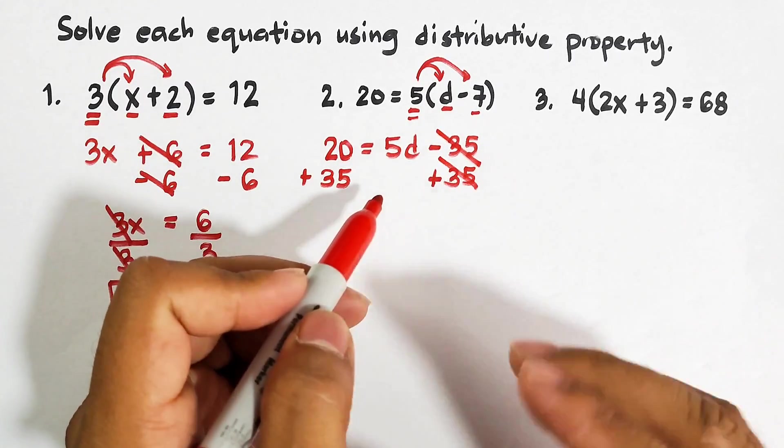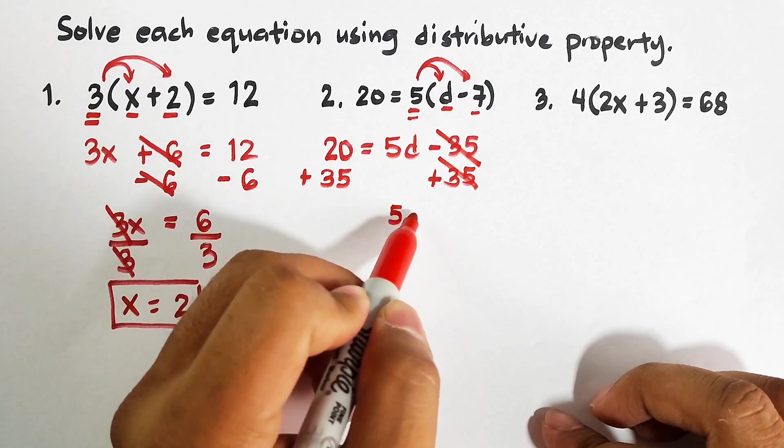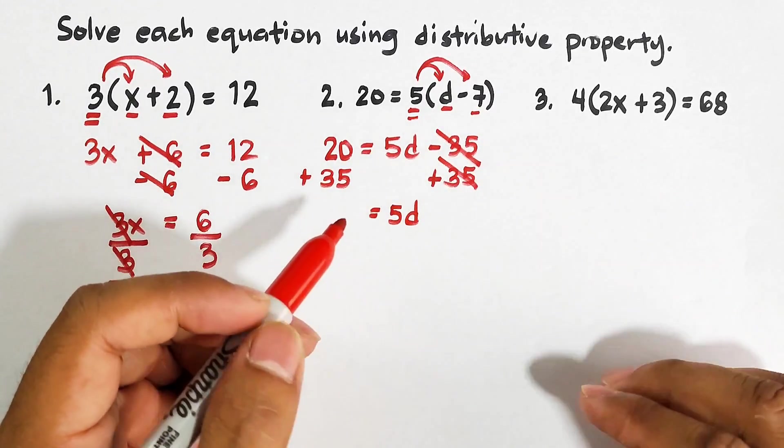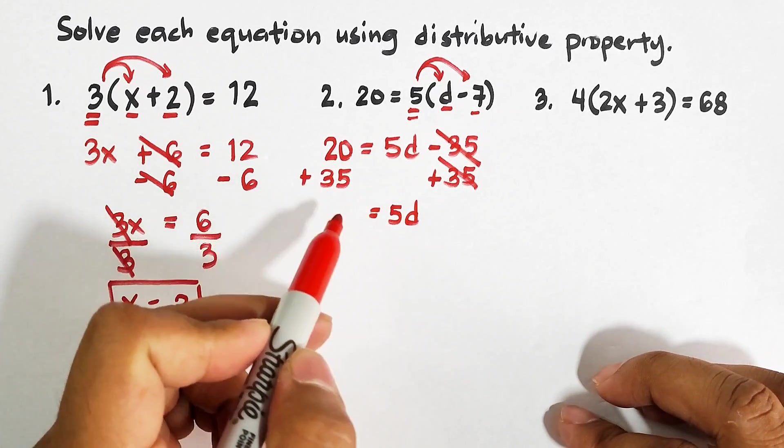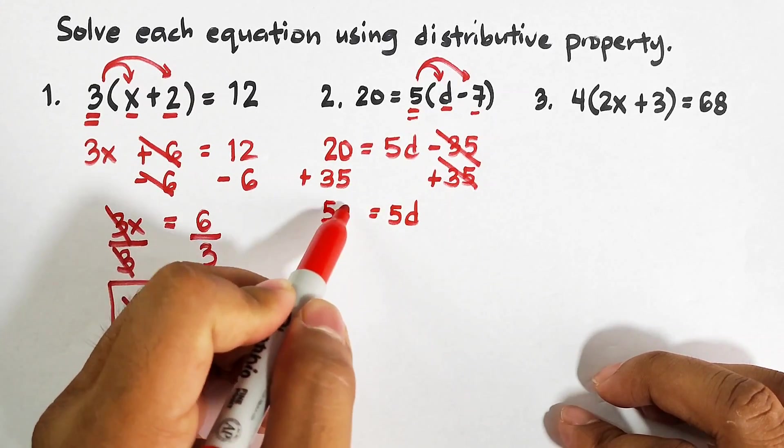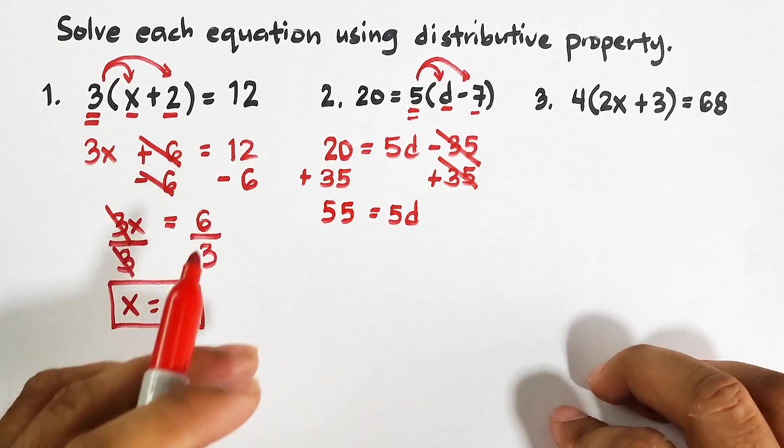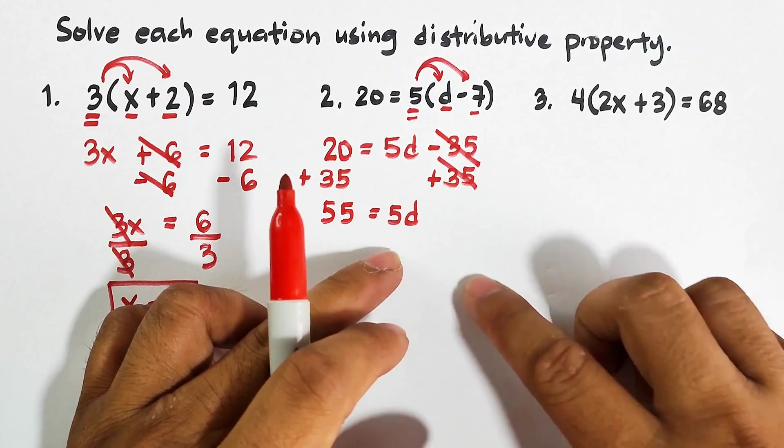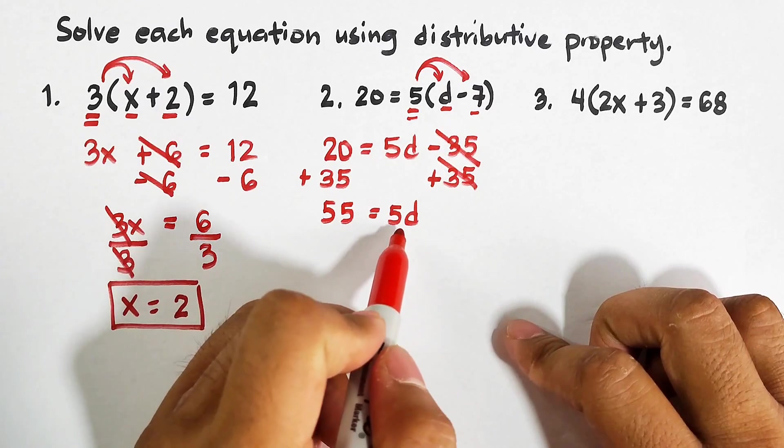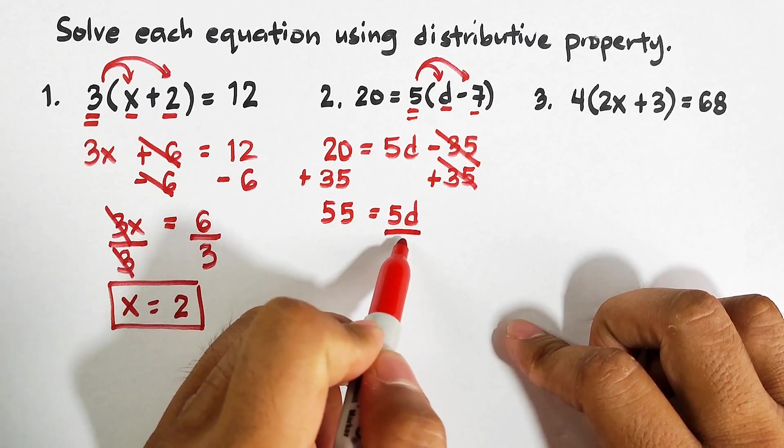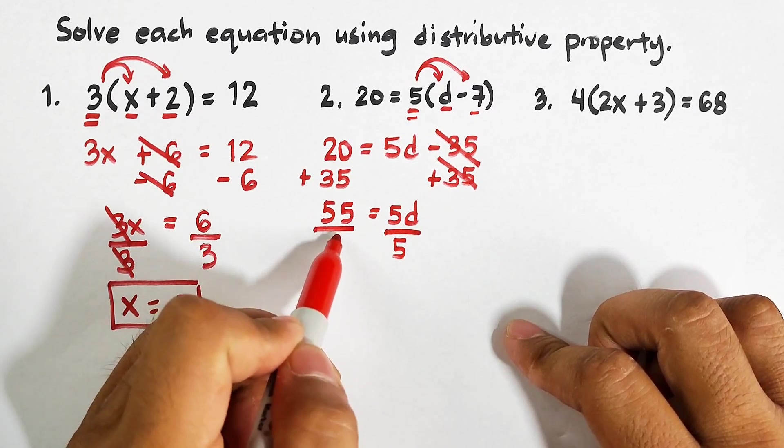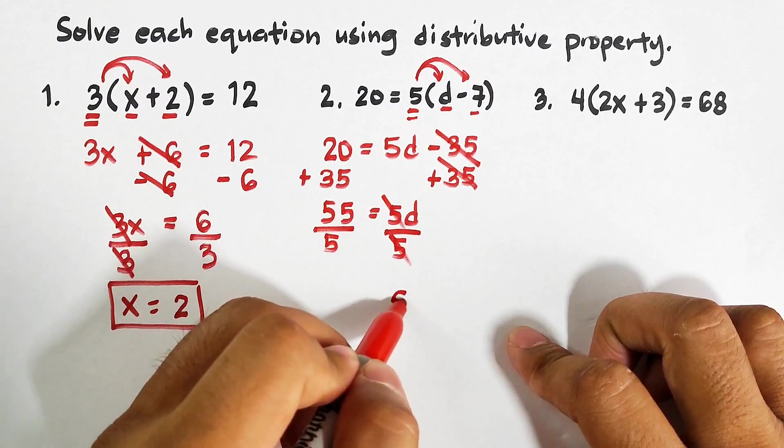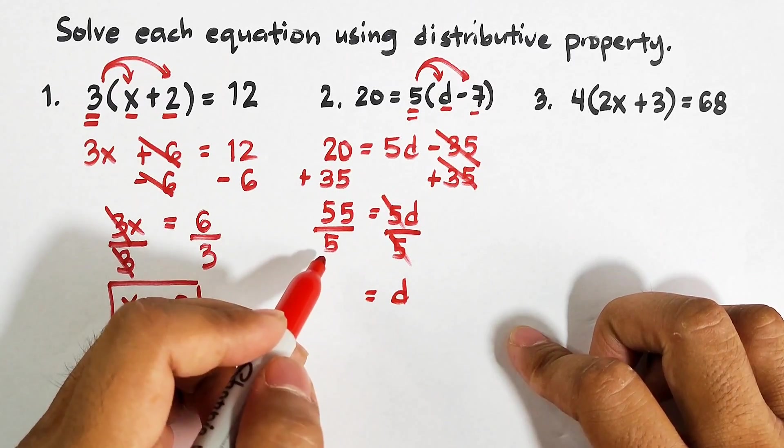What remains here on the right side is 5d. On the left side we have 20 plus 35, that will be 55. And as you can see, same as this, whatever is with the variable, this will be our divisor. This is 5, so we will divide this by 5. Cancel, cancel. This is d is equal to 55 divided by 5.